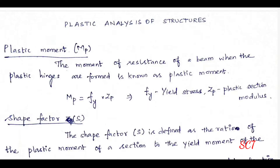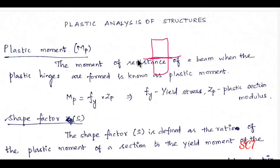We will compare plastic and elastic analysis. If you see the elastic moment, it will act at the center of gravity. But the plastic moment will act at the equal area axis. In a rectangular symmetrical section, the center of gravity is the neutral axis, and the neutral axis is the same as the equal area axis.